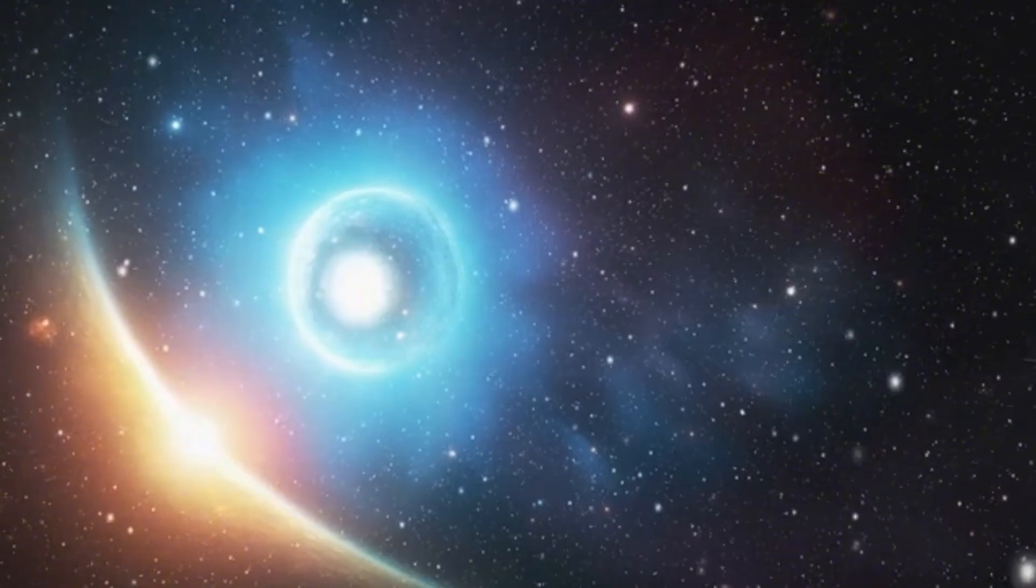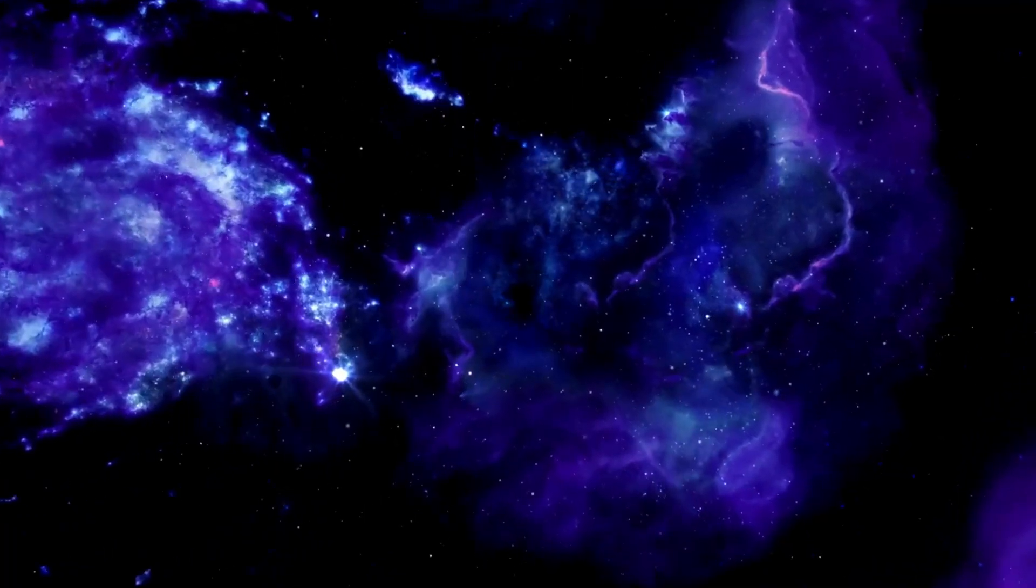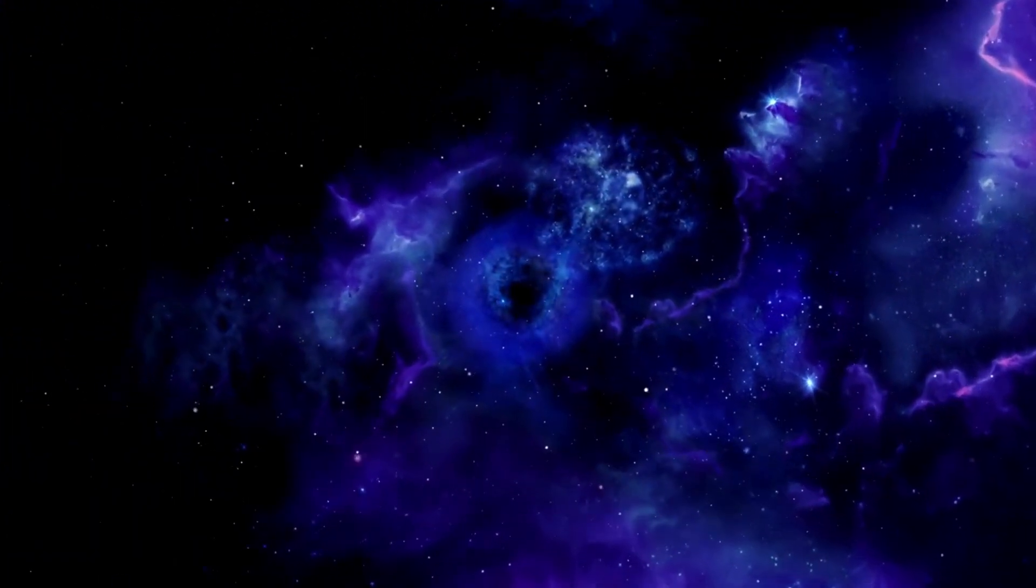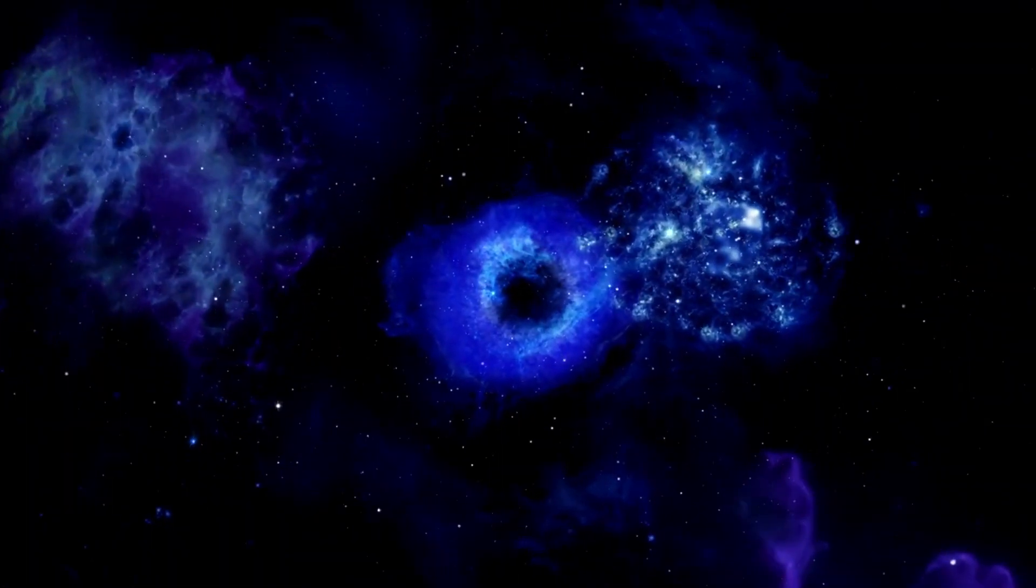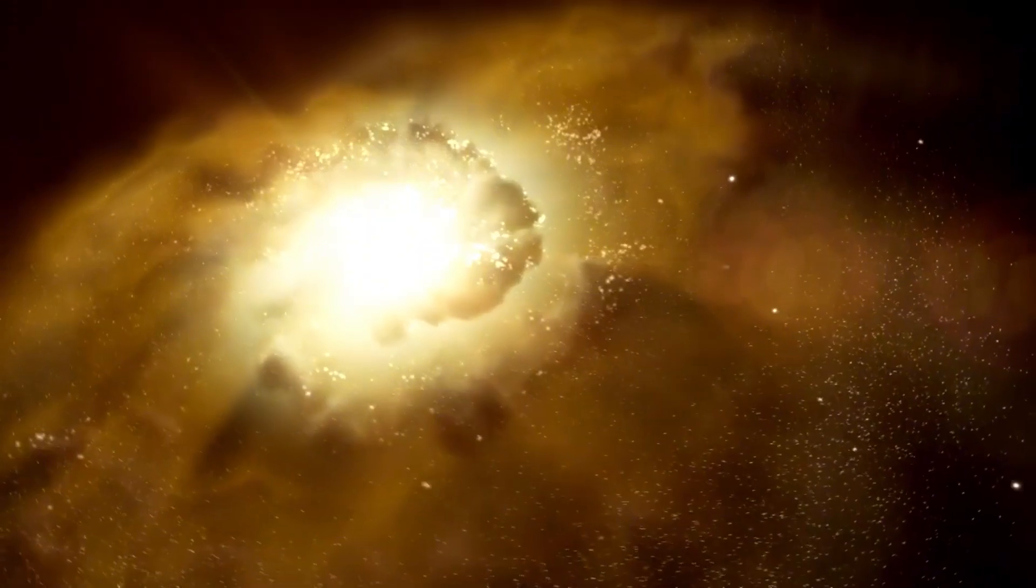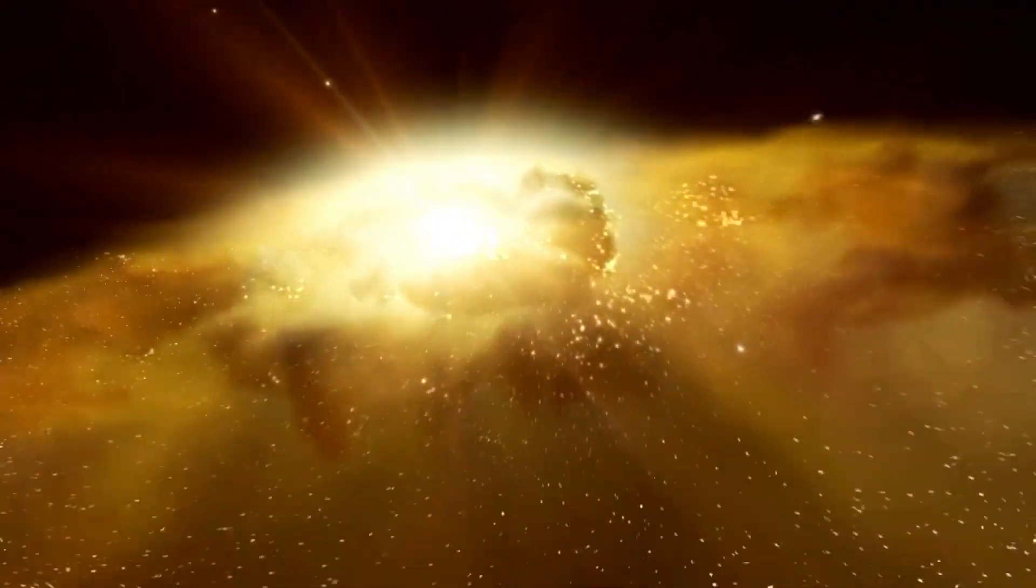In addition to gas giants, there are also Neptunian exoplanets, which are similar in size to Uranus and Neptune. Among these are hot Neptunes and mini-Neptunes, which are smaller and closer to their host stars than their gas giant cousins. These planets are often shrouded in mystery, making their atmospheres difficult to study from afar.